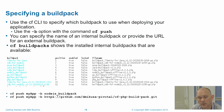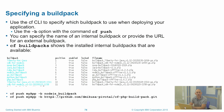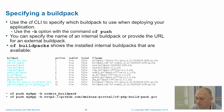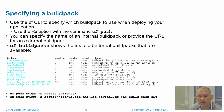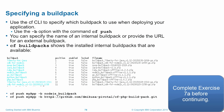To specify a build pack, you can either use the build pack name — which is the left-hand column output from the CF buildpacks command — or you can specify a URL where an external build pack lives on the internet.